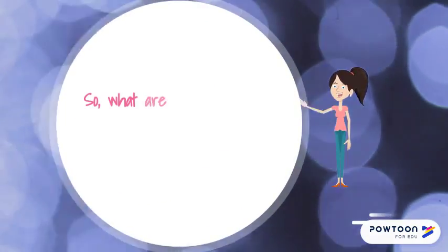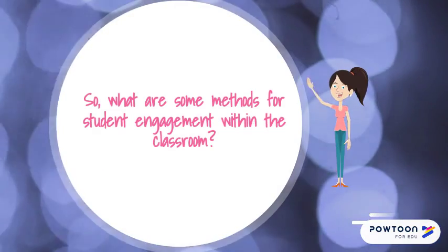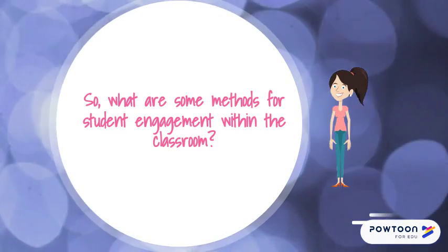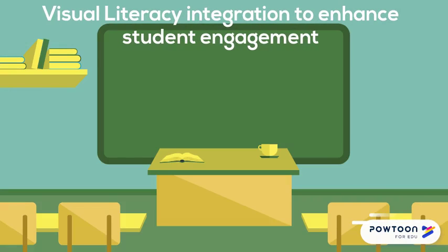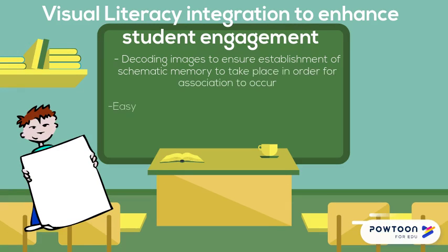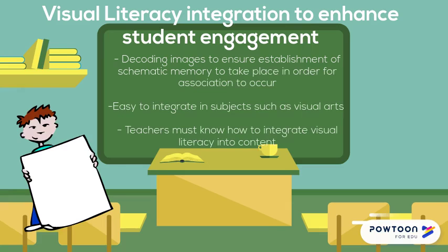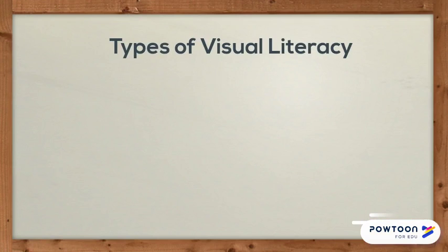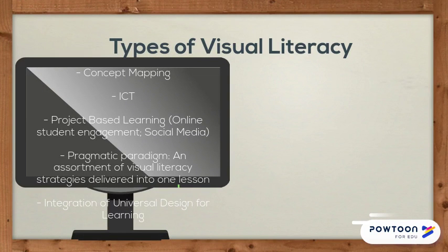So what are some methods for student engagement within the classroom? Visual literacy is a concept of decoding images and being able to connect visual content to meaning, as well as developing a schema based on association and personal experiences. Practical classes are easy to build schema through visual literacy as the absorption of schematic memory is easily achieved. In order to incorporate visual literacy within the classroom, the teacher must know what types of visual literacies exist. For example, concept mapping through videos and images to allow students to build associations with the content could enhance engagement. This may include the use of maps, diagrams or images.